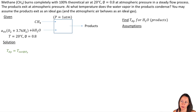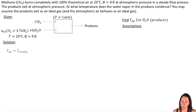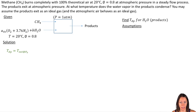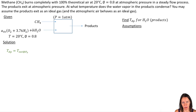Let's work another problem. We've got methane burning completely with 100% theoretical air at 20 degrees Celsius with a relative humidity of 80%. What that means is I've got moisture in the air. On my diagram, I've got a theoretical amount of dry air, but I'm adding B_H2O — some amount of moisture within that atmospheric air. Then of course, I've got my products coming out. Both the products and the atmospheric air behave as an ideal gas.